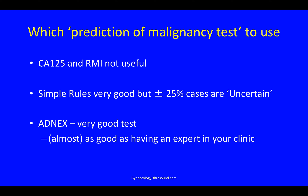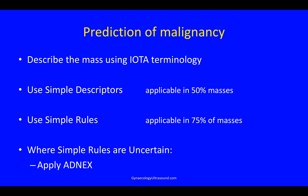Which prediction of malignancy tests to use? CA125 and RMI are not so useful. Simple rules are very good but around a quarter of cases are uncertain. ADNEX is a very good test and it's almost as good as having an expert in your clinic. So: describe the mass using IOTA terminology; use simple descriptors, applicable in half of masses, to sift out the really easy obvious ones; then use simple rules, applicable in 75% of masses; but where they are uncertain, apply ADNEX.